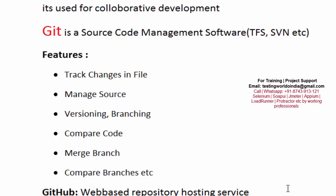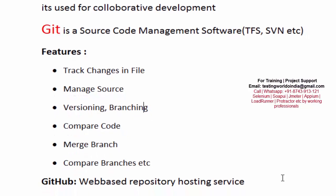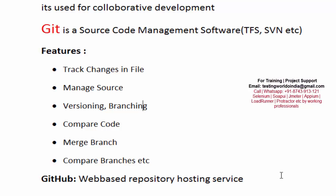GitHub is a web-based repository hosting service. When working with Git, we first create a local repository on our machine. Each team member creates their own local repository. Later, we push what we have in our local repository to a centralized repository, and that centralized repository is hosted on GitHub. So GitHub is where we create centralized, or remote, repositories.